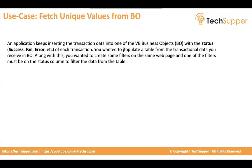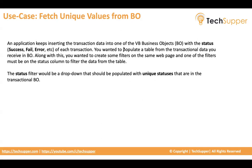Now you have a requirement: you would like to create a web page with a table populated from that business object data. Since you will have a huge amount of data, you also need to create some filters. One of the filters must be on the status column to filter the data from the table. When you choose a status, the corresponding data should be filtered. The requirement is that the status filter must be a dropdown, and that dropdown must populate unique statuses from the transactional data.